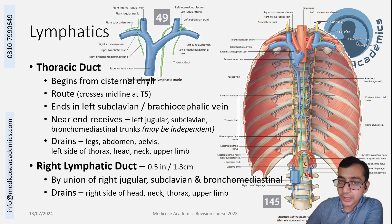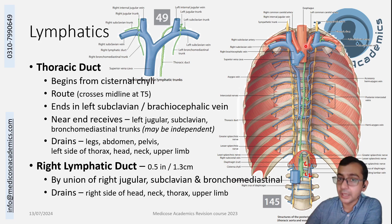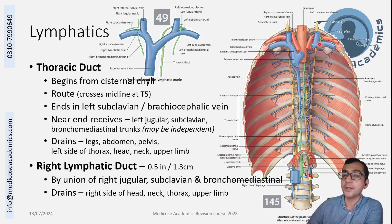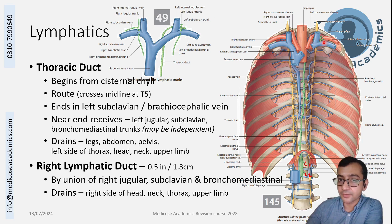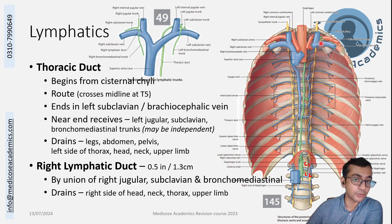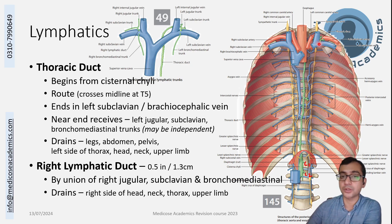It continues upward on the left side and into the neck, where it jumps forward — it is behind the artery, behind the vein, then comes forward above the subclavian artery and above the subclavian vein. It enters the subclavian vein at the junction between the internal jugular vein and the subclavian vein.